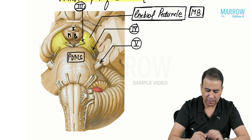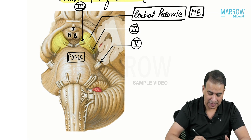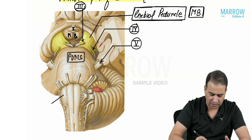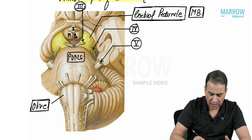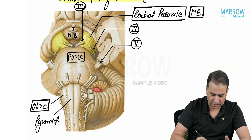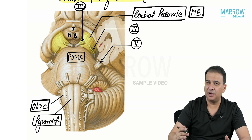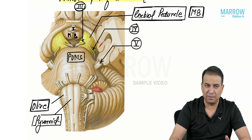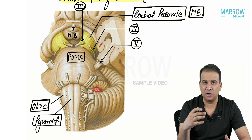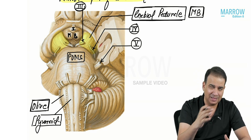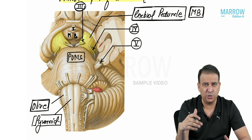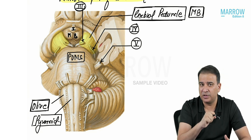In the medulla oblongata, some features to notice: you can see the olive — this elevation is called the olive, caused by a nucleus inside called the inferior olivary nucleus. And this is the pyramid, through which the corticospinal tract passes. The two major elevations on the ventral aspect of the medulla oblongata are the pyramid and, lateral to it, the olive. The olive is because of the inferior olivary nucleus present inside.